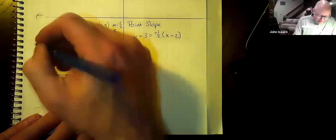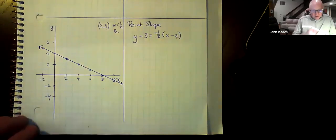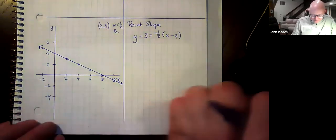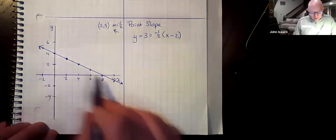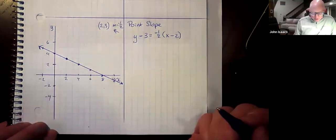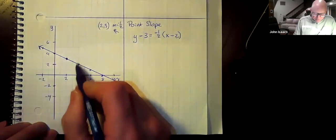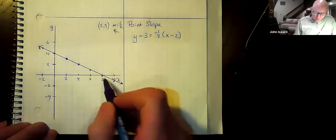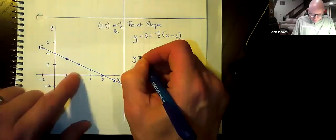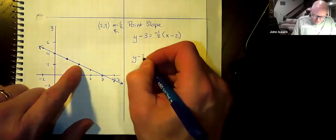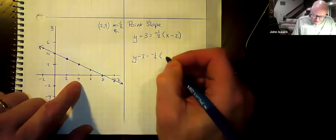Okay. Now, this means we could write some other point-slope equations. Now that we have this line going through all these points, we could write it using this 4, 2, for example. Or we could use it - well, here, let's do that. Y minus 2 equals negative one-half - the slope is not going to change - times x minus 4.